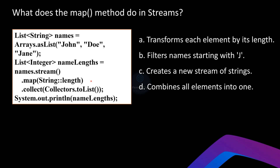Now this is the important part — the `map` method is used to transform each element of the stream. It takes each name in the stream — John, Doe, and Jane — and applies the `length` function to them. This converts each string into its length: John has 4 letters, Doe has 3, and Jane has 4. After this operation, we have transformed our stream of names into a stream of their lengths: 4, 3, 4.